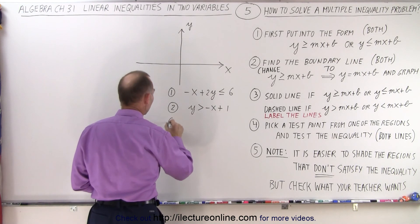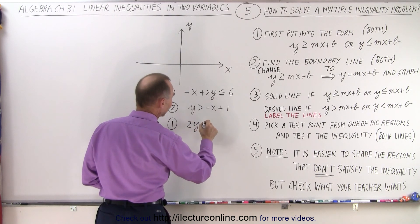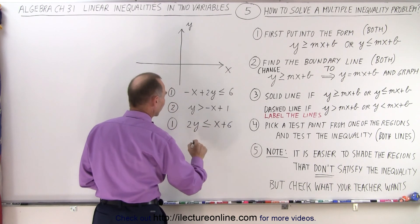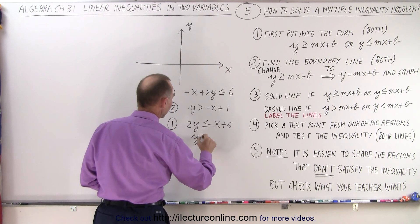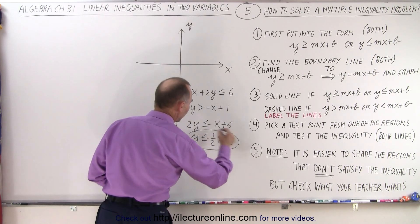First, we're going to put them into the form y is greater than or less than mx plus b. This one is already in the correct form, but this one is not. So for number one, we're going to bring the x to the other side, so we have 2y is less than or equal to x plus 6. Dividing both sides by 2, we have y is less than or equal to 1/2 x plus 3.